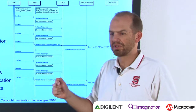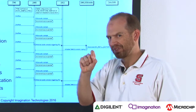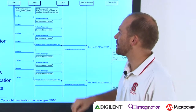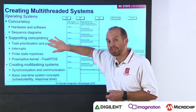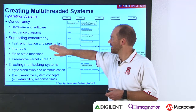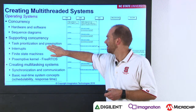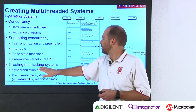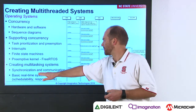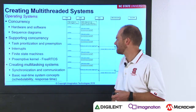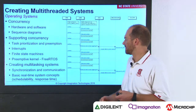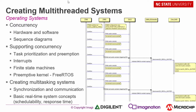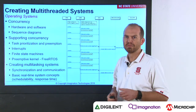The embedded system is more than just what your source code says — it's more than just the program that's running; there are multiple pieces within that program. In this course we look at various ways of supporting concurrency: schedulers, task prioritization, and preemption. We look at interrupts and finite state machines, and we end up using a preemptive kernel. We also look at creating multi-tasking systems, synchronization between tasks, and communication. We introduce basic real-time system concepts such as schedulability and response time. This is operating systems for embedded systems, but it's very different from what you'd get in a typical computer science class.